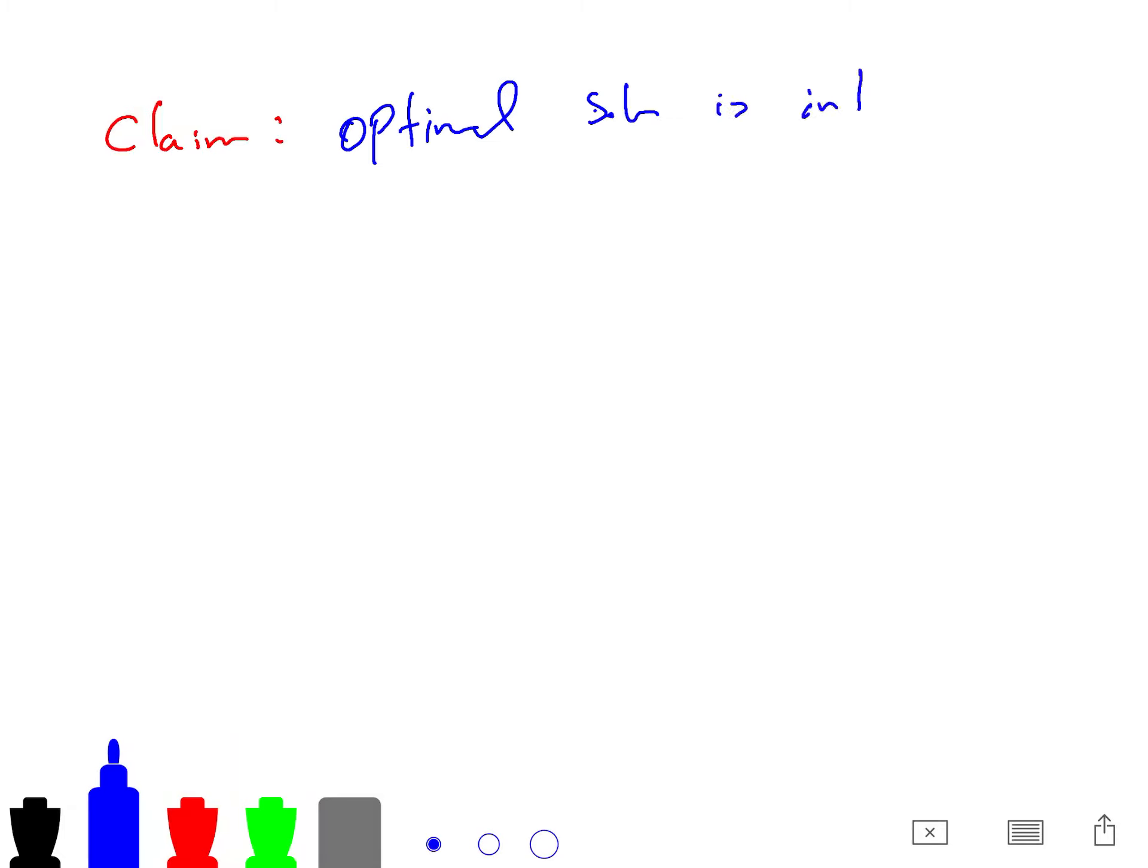So I want to say that a very important claim that optimal solution is integral. Optimal solution is integral. By integral, I mean it doesn't have a decimal. So it is integer. So this optimization problem, the optimal solution is integral. And it has a very big proof. So you may not like that because it's very long.